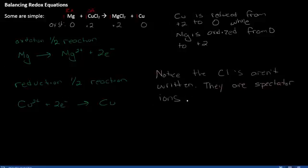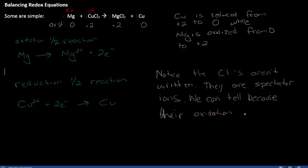Below that, you can see the reduction half-reaction. Notice the electrons appear on the opposite side compared to the oxidation half-reaction. Again, it is both mass and charge balanced. The chlorines aren't written in either of these half-reactions — these are spectator ions, because their oxidation states don't change throughout the course of the reaction.